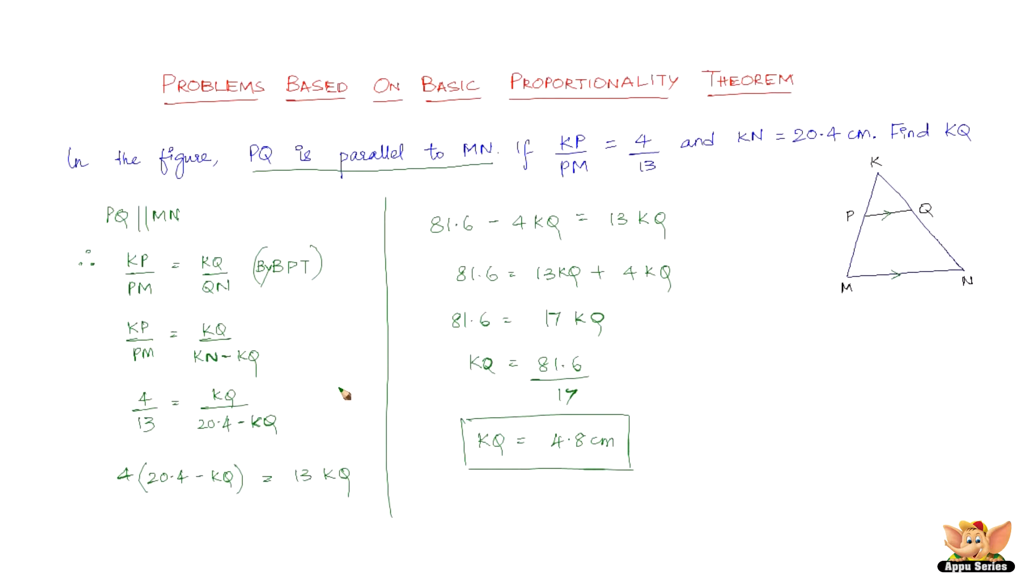Now, another thing that I should mention at this point is we need to find KQ. And that is the reason why we are writing QN in terms of KQ and KN. In case we had to find QN, we would have written KQ as KN minus QN. So if you ever wondered why this and why not replace KQ, because we had to find KQ. Alright, let's solve another problem quickly.